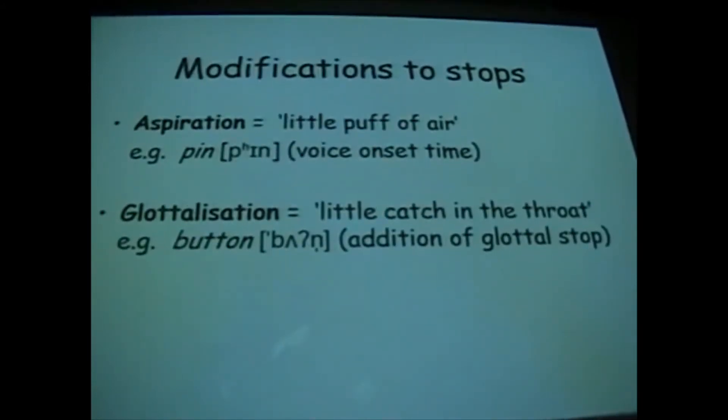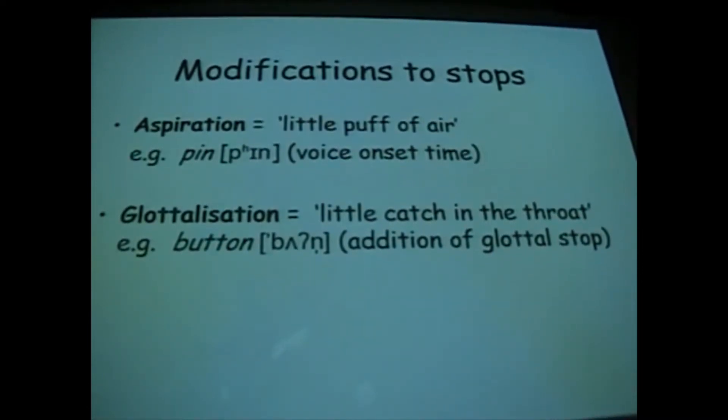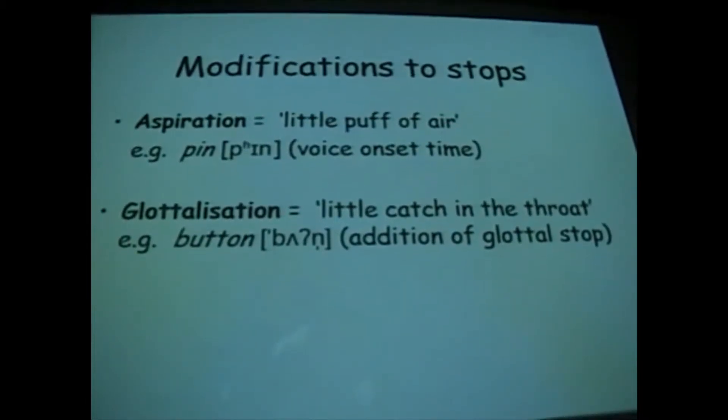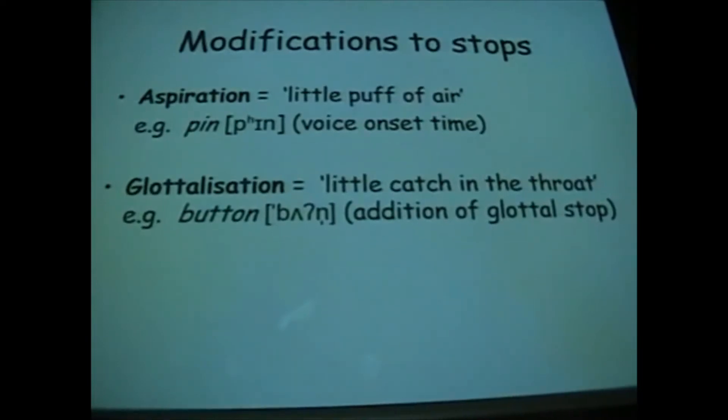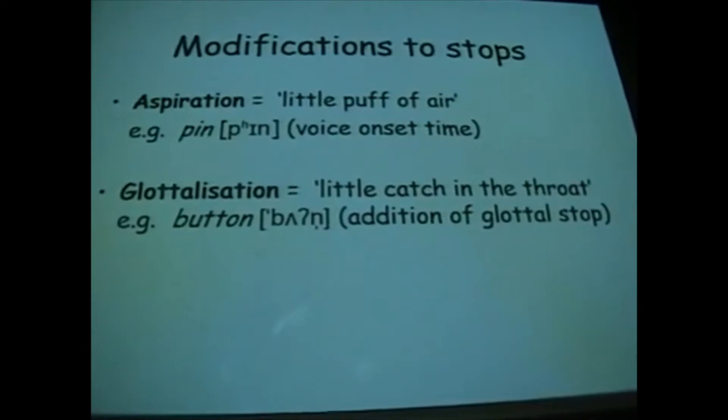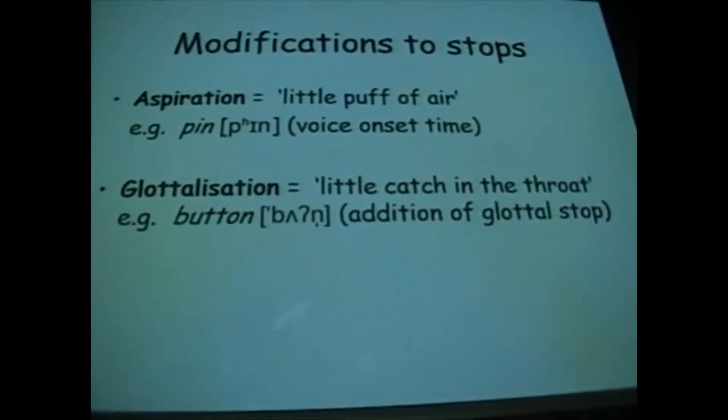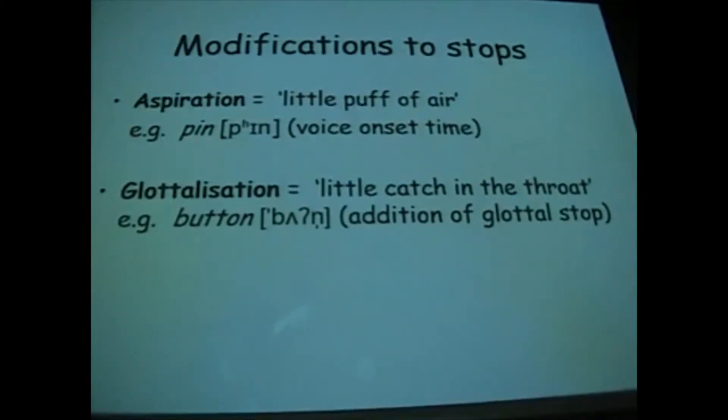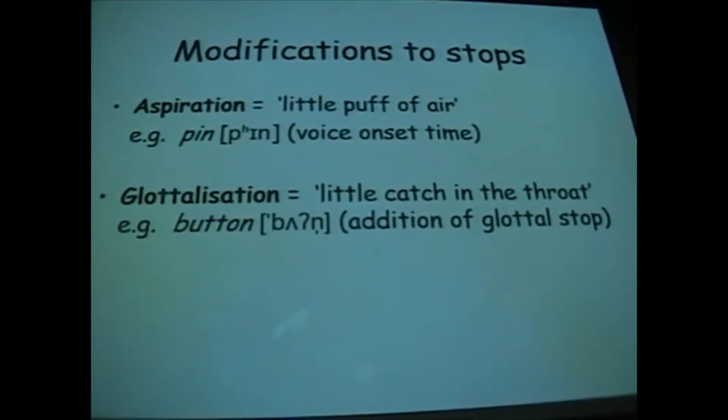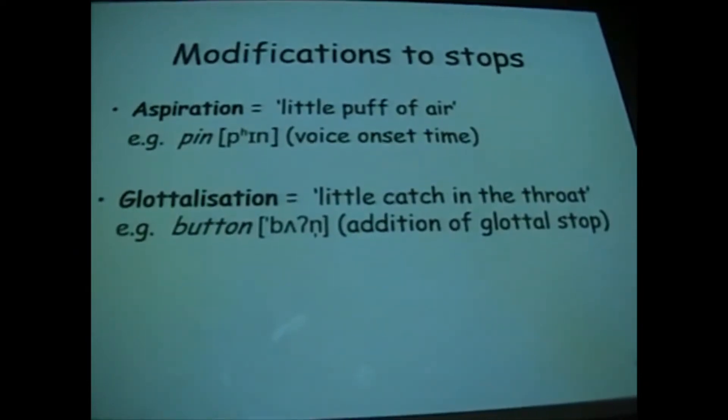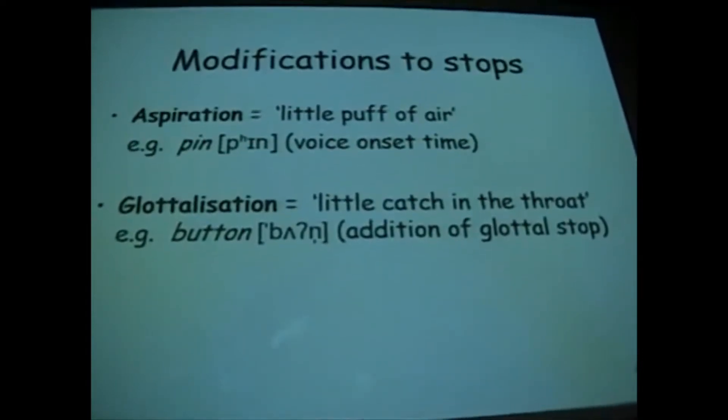We can also include other items in our description. We can include modifications of the consonants we're going to call stop consonants. So we have aspiration, a little puff of air. If I say a word like pin, or indeed puff, then you can hear this little escape of air as I produce that sound. This happens when you have a P, T, or K in initial position in the syllable. We also have modifications like glottalization, the little catch in the throat that you have, for instance in a word like button or written. The vocal folds snapping together and stopping the air momentarily as the airstream comes from the lungs. Very characteristic of present-day British English. And in the next lecture on Monday, I'll examine that in rather more detail.